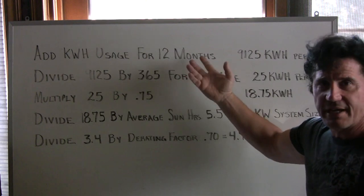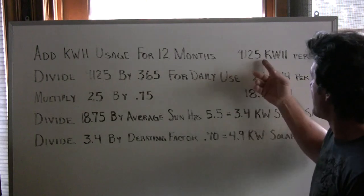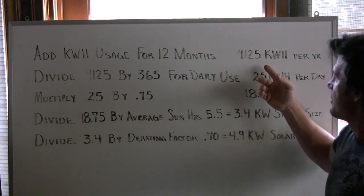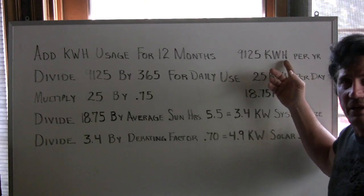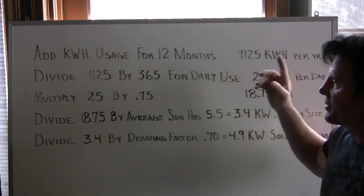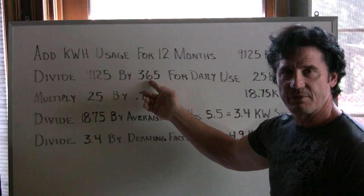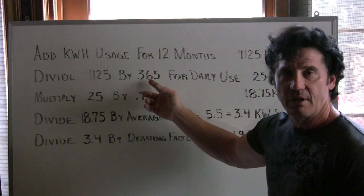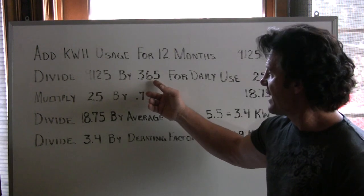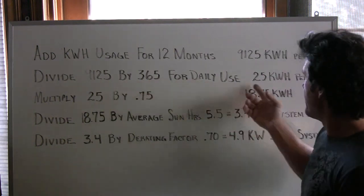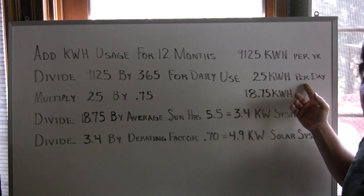We're just going to take a number of 9,125 kilowatt hours per year as your usage. Once you've figured that number out, you're going to take it and divide it by 365 — there are 365 days in a year — to find out your daily usage. When you divide that, you come up with 25 kilowatt hours per day.